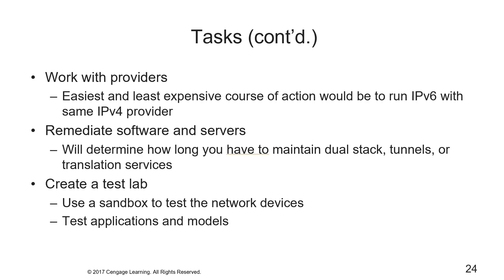Remediating software and servers is a critical task, though it's not one the network team usually performs — the server and application deployment teams normally update the software for IPv6. The network team needs to provide information and education about the new network. For example, if the server team believes it should always use static addresses on servers, you may need to educate them about how each interface on a server will have several addresses and how they configure themselves in IPv6. Software remediation will be the critical path for most projects and will determine how long you need to maintain dual stack tunnels or translation services.